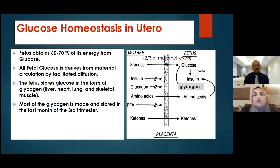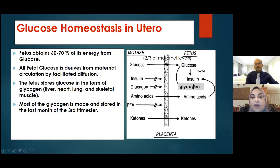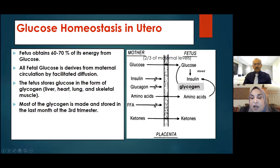Regarding glucose homeostasis in utero: as we know, the mother and fetus are treated as one unit. All the glucose of the fetus is obtained from the mother and is stored as glycogen in many organs like the liver, heart, lungs, and skeletal muscles. Most of this glycogen is stored in the last trimester of pregnancy.